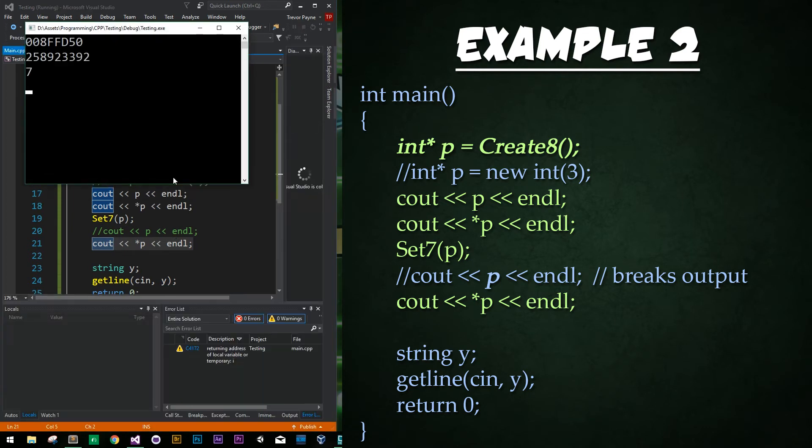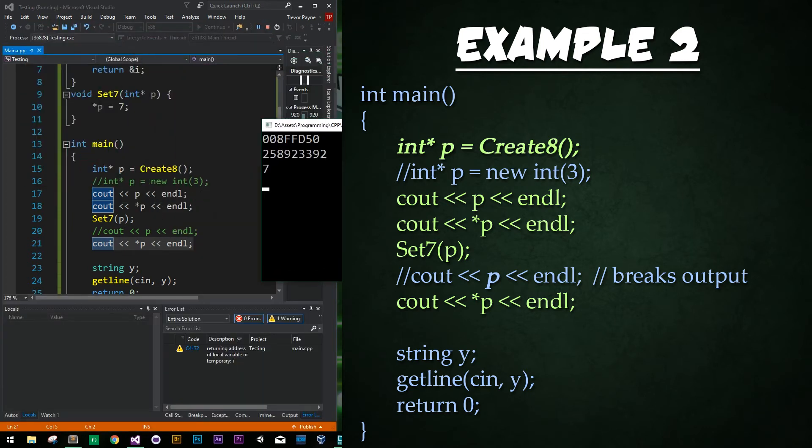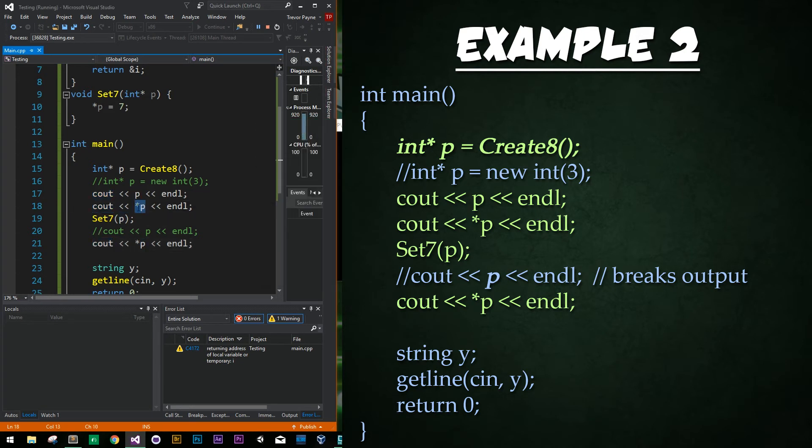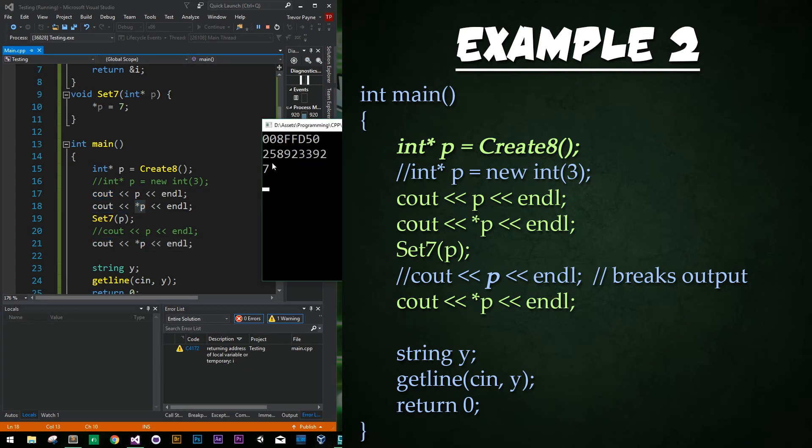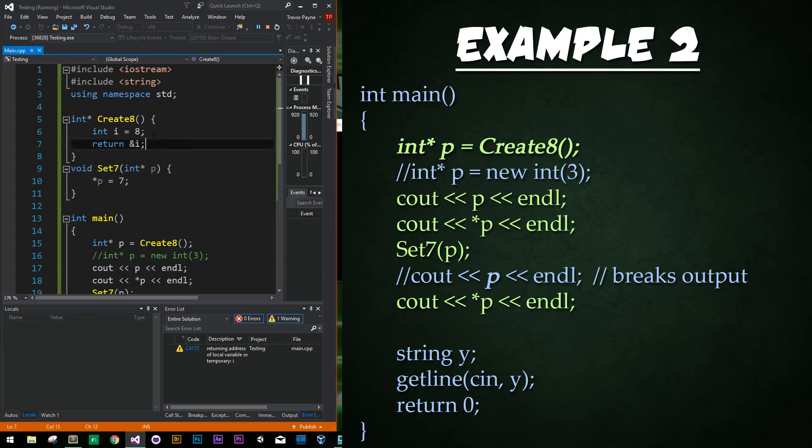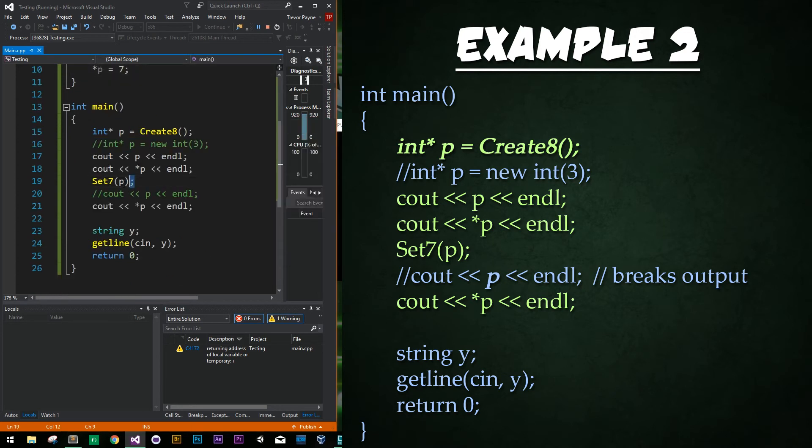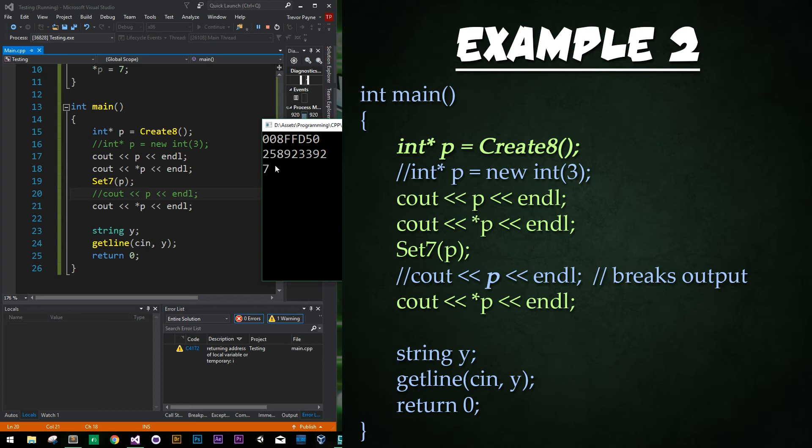If we press f5 to run the code we get p initially the address is pointing to this address and then when we try to get the value at p we're getting this garbage value of 258 million in here. That's actually what we'd expect because we're pointing to a value that has been erased from memory. Okay so then when we run set 7 we're setting that value that the address is pointing to to 7 which is okay. So what's the problem here?